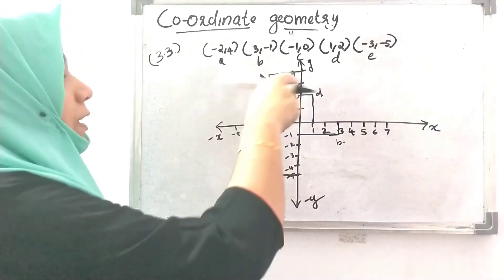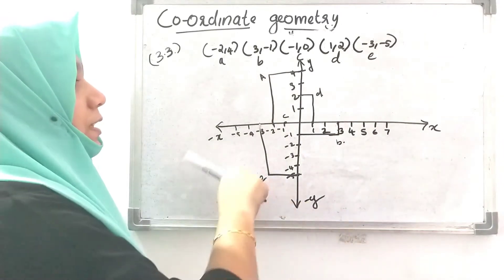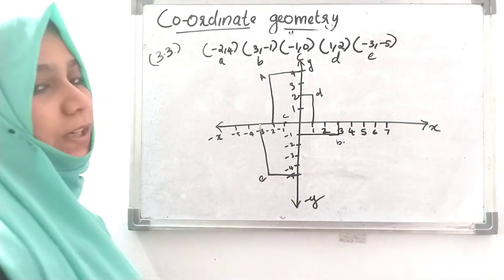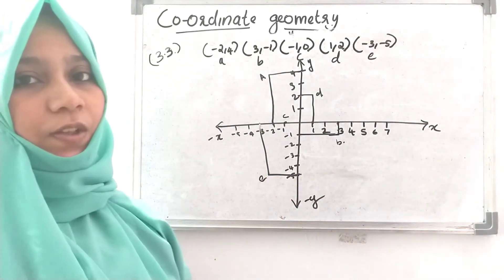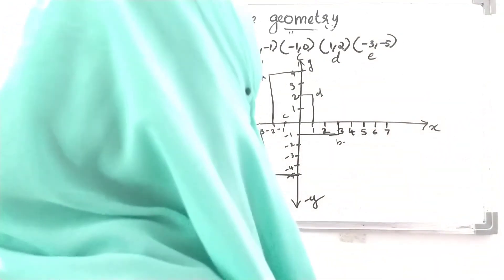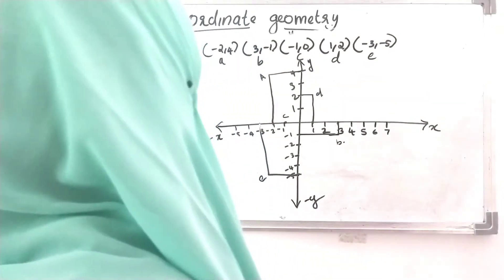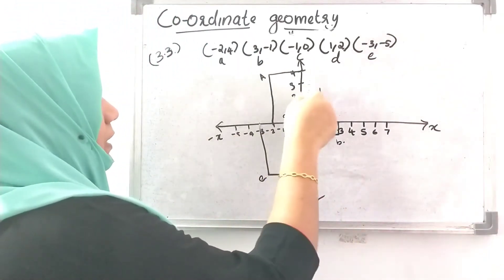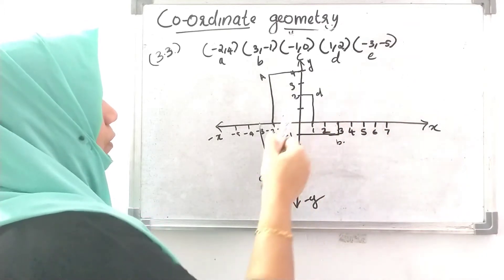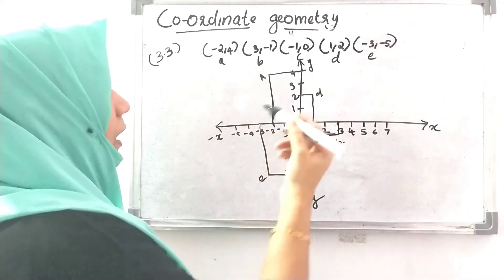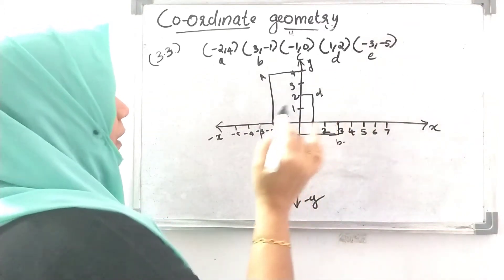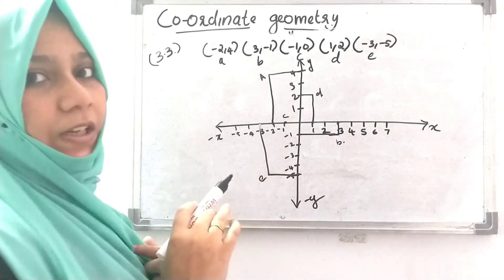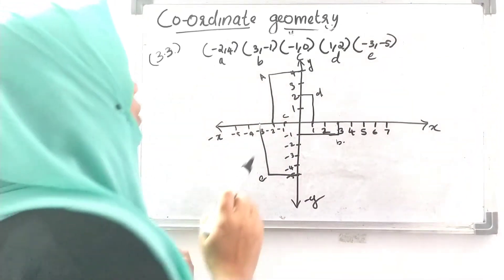The coordinates of the points x and y are represented in the Cartesian plane. In the Cartesian plane, we have points A, B, C, D, E. We have to plot these on a graph.